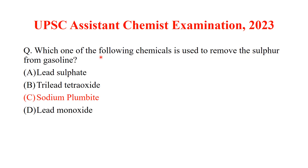Which one of the following chemicals is used to remove sulfur from gasoline? Sodium plumbite reacts with sulfur to form lead sulfate. So, the answer is option C.